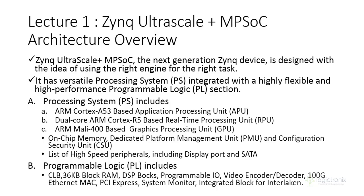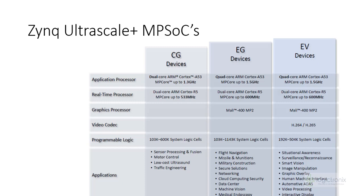Alongside the Processing System components, there is another section called Programmable Logic. This Programmable Logic consists of a high-speed FPGA fabric with 100G Ethernet MAC, PCIe integrated block, configurable logic blocks, signal processing blocks, programmable IO, and video encoding and decoding blocks.